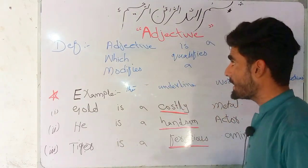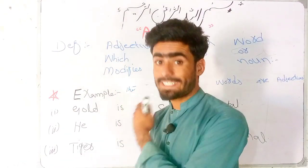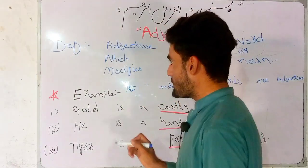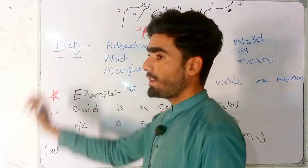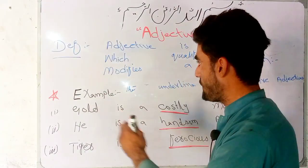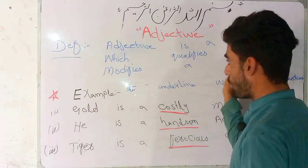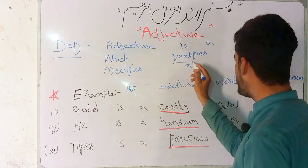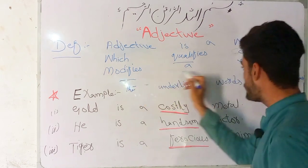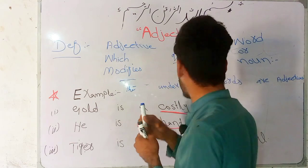Let's start our video which is based on adjective. First, we will learn the definition of adjective. The definition of adjective is: a word which qualifies or modifies a noun or pronoun.